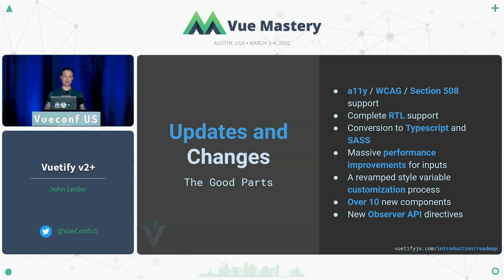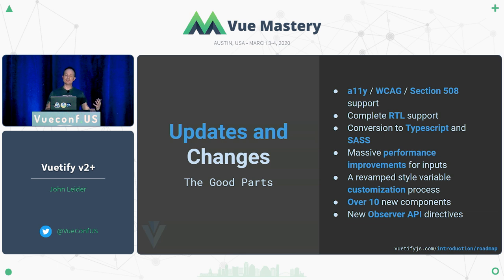We were able to reduce compilation time, added bunches of new components and new things like the Intersection Observer API, which has allowed us to do some pretty amazing things — lazy loading built into images automatically — but also giving the developer the ability to use that themselves.